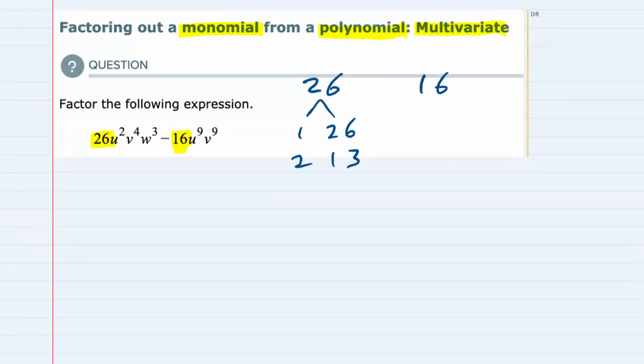16 can be written as 1 times 16, 2 times 8, 4 times 4. So the greatest common factor between those two numbers is 2. 2 is the largest factor of both 26 and 16. So that means on the number side I'm going to be able to factor out a 2 from the expression.